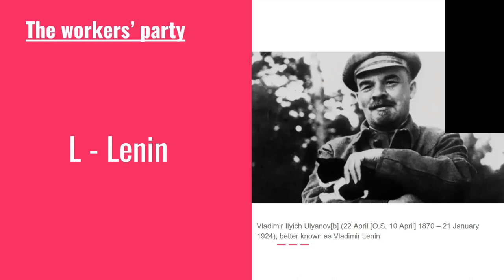Lenin understood that spontaneous working class rebellion, while powerful, was not enough on its own to confront the power of the capitalist state. The working class had to be organized politically as well as practically. He championed a political party that was by and for workers, through which they could give leadership to the wider class and wage battle in the political sphere. This party would operate differently from bourgeois political parties — rather than relying on a passive membership, it would be a democratic body that sought to mobilize its membership in struggle, drawing on and amplifying mass struggles rather than replacing them with parliamentary action.